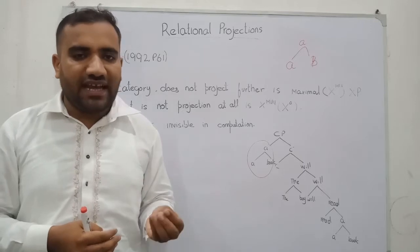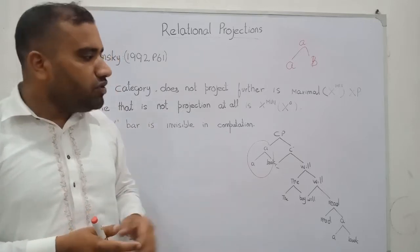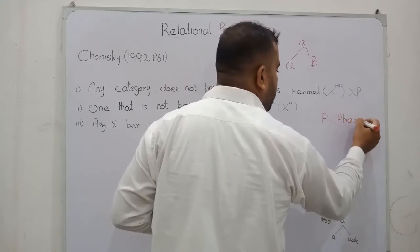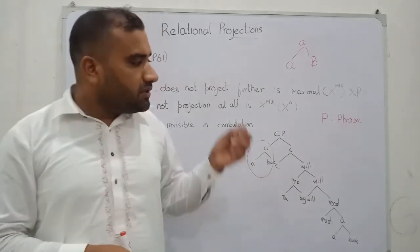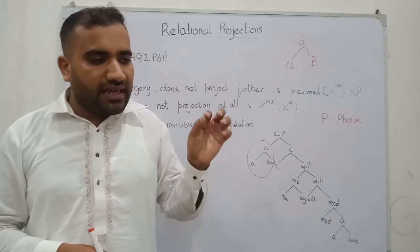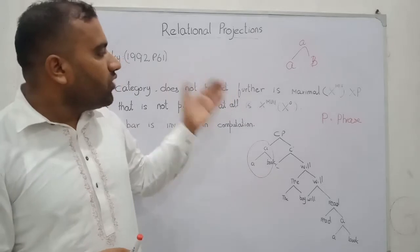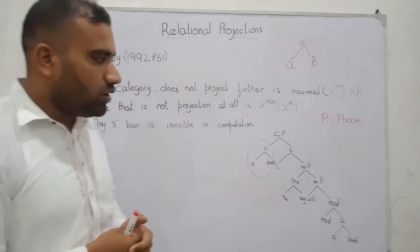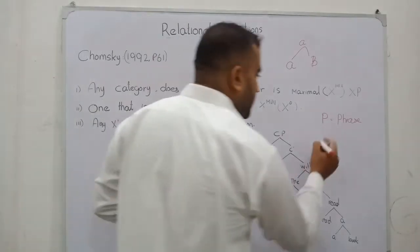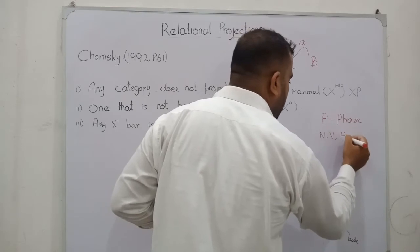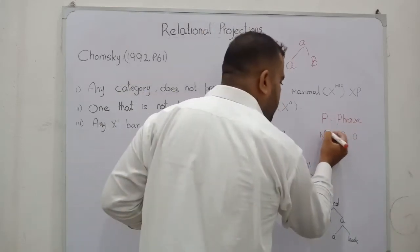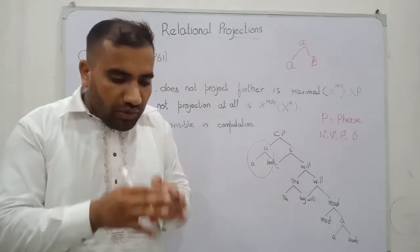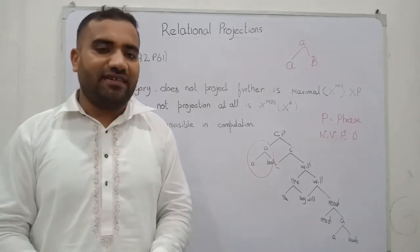In simple terms, when we make the XP — where P means phrase — it is the maximal level. This level tells us that the category cannot be further projected. The second part of the relational projection is one that is not a projection at all. We have N, V, P, D — these are the heads and these are the minimal levels, because at the lower level we cannot break these heads within the syntax.